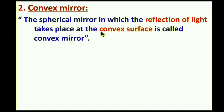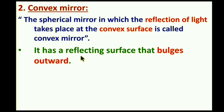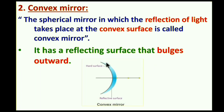The second type is the convex mirror. The spherical mirror in which the reflection of light takes place at the convex surface is called a convex mirror. The convex mirror has a reflecting surface that bulges outward. If you touch a convex mirror with your fingers, you can feel that the surface bulges outward. If the reflecting surface bulges outward, it is called a convex mirror.